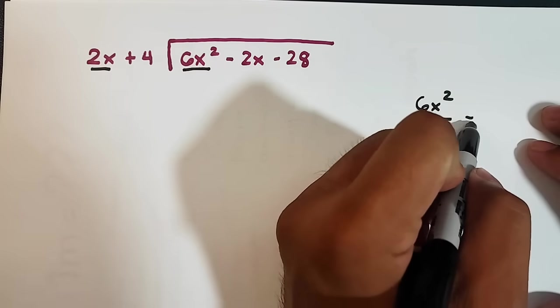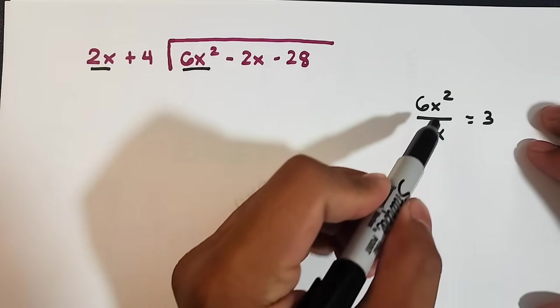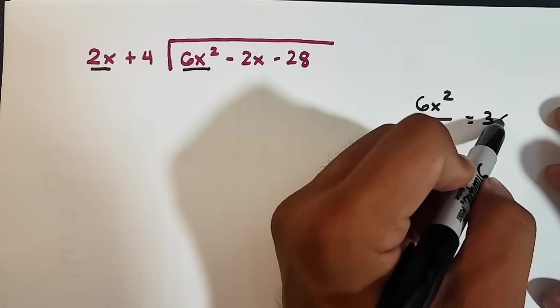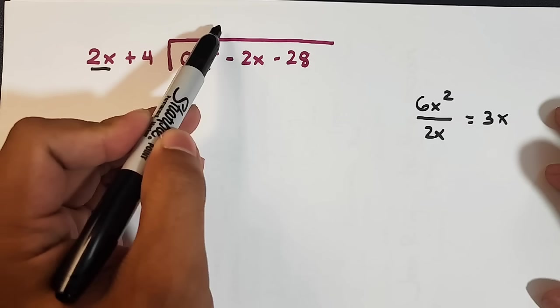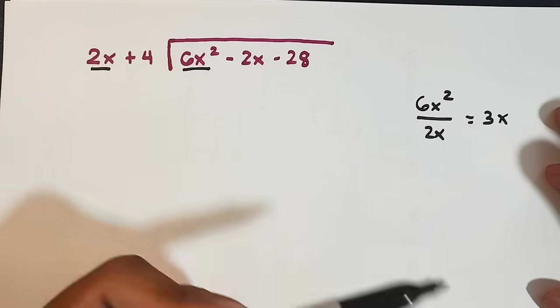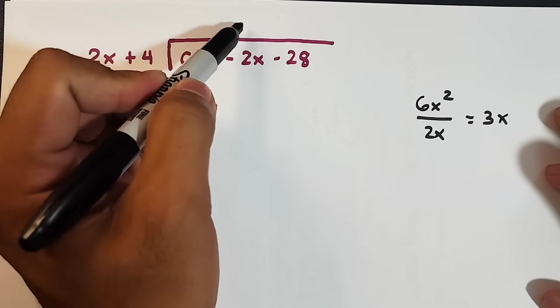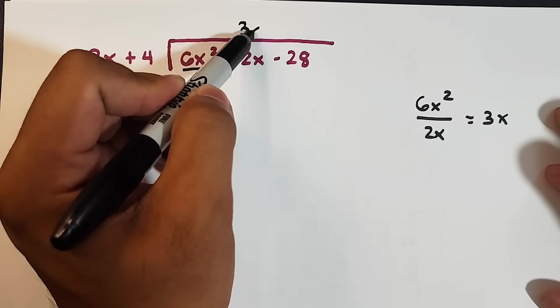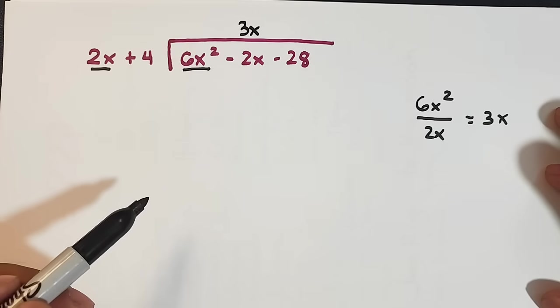6 divided by 2 is 3. x squared divided by x is simply x. So we place it here. And this 3x will serve as the partial quotient. So it will be placed here. We have here 3x.